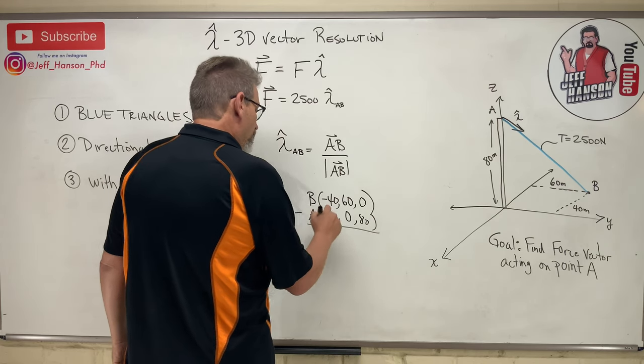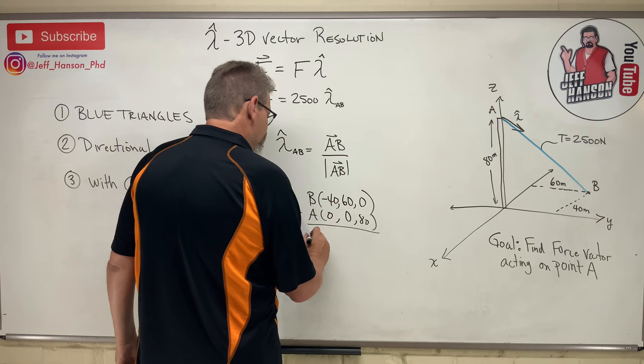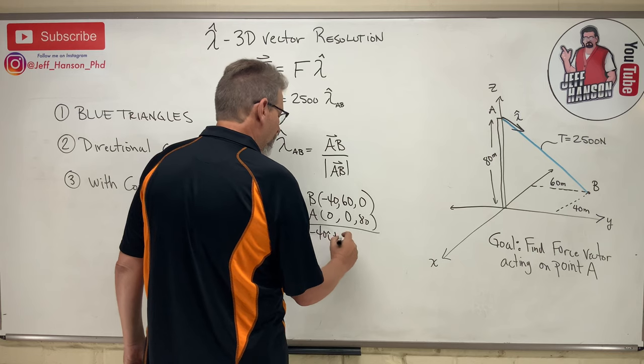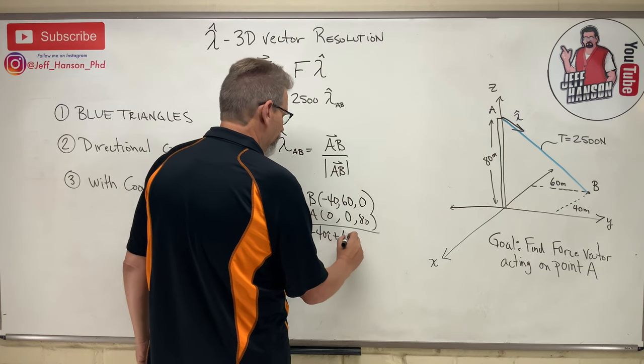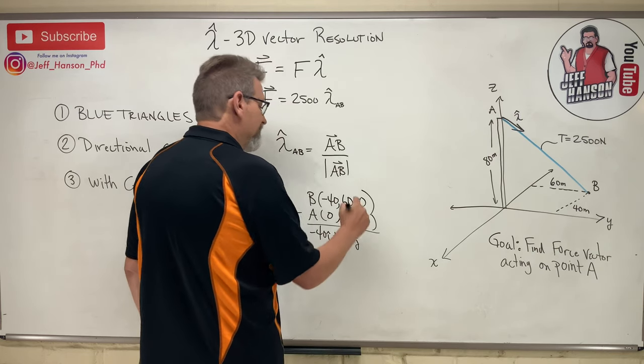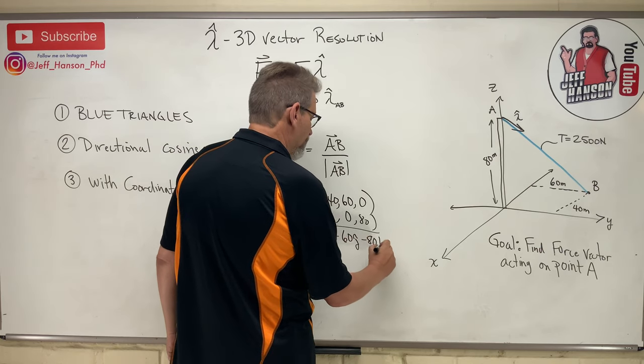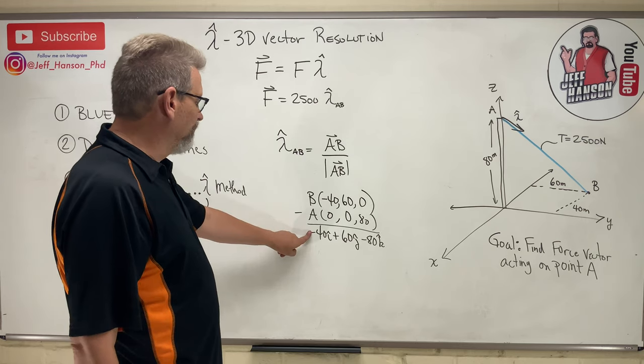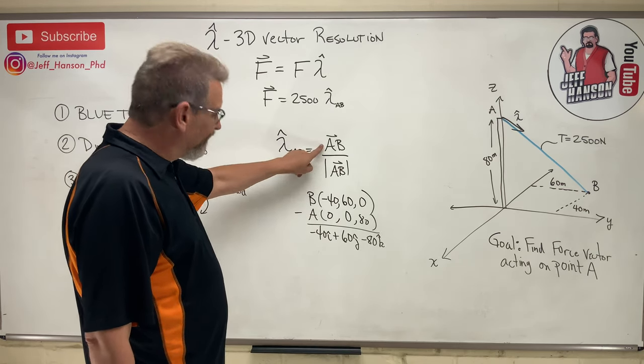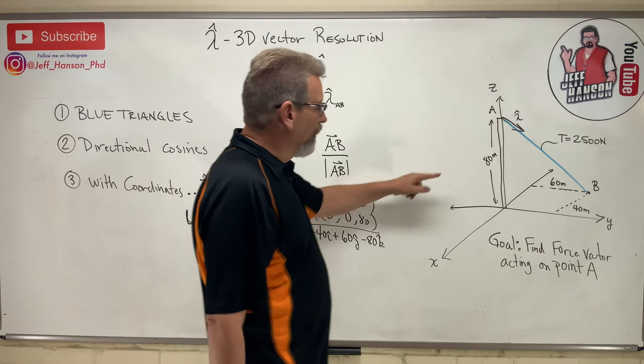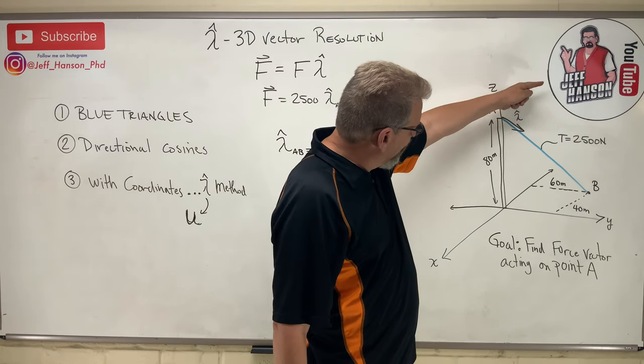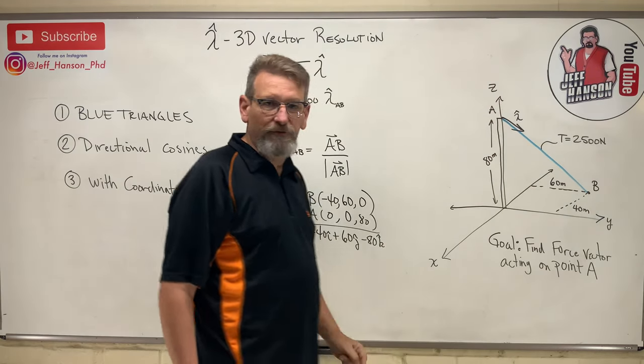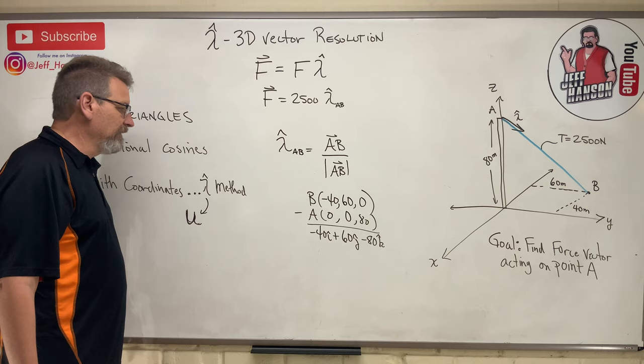So here we go. Negative 40 minus 0 is negative 40 I hat. 60 minus 0 is 60 J hat. And then 0 minus 80 is minus 80 K hat. So there you go. That, my friends, is vector AB. That's how you get to grandma's house. Look at there. You go 40 negative in the X, then you go 60 positive in the Y, and then you go downhill, boom, when you're at grandma's house. You're sipping some sweet tea right there, baby. All right, here we go.